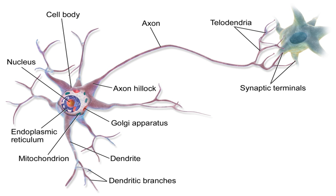Neurons fall into types. Sensory neurons respond to stimuli such as touch, sound, or light that affect the cells of the sensory organs and send signals to the spinal cord or brain. Motor neurons receive signals from the brain and spinal cord to control everything from muscle contractions to glandular output. Interneurons connect neurons to other neurons within the same region of the brain or spinal cord in neural networks.